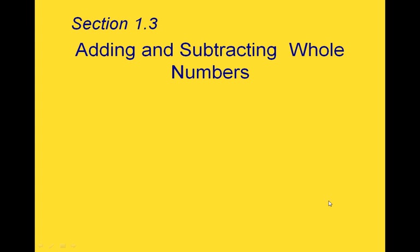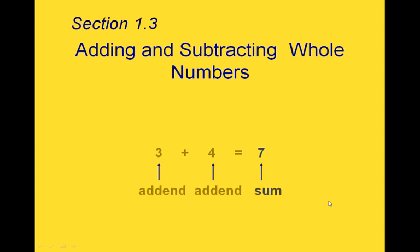This is section 1.3 about adding and subtracting whole numbers. When we add two numbers like 3 and 4 and get an answer like 7, we have names for the different pieces of the expression. The 3 and the 4, since they're the two things that we're adding, are both called addends, and the 7 is called the sum.